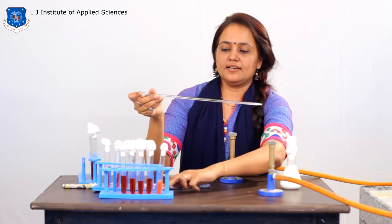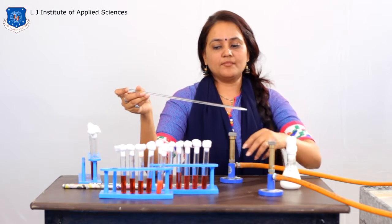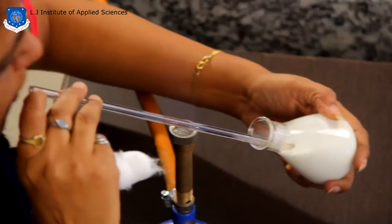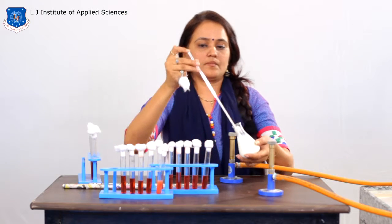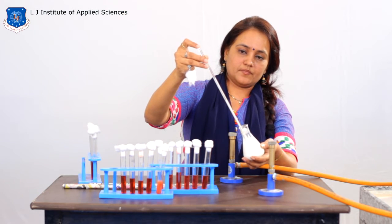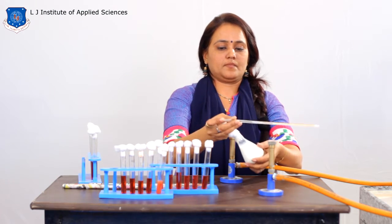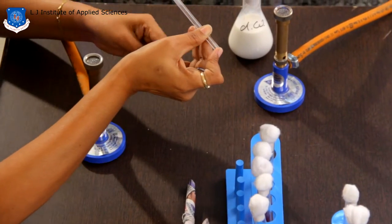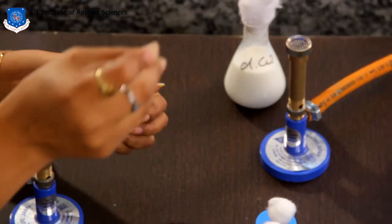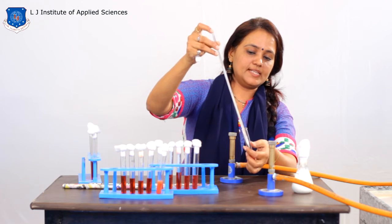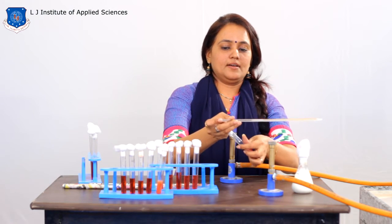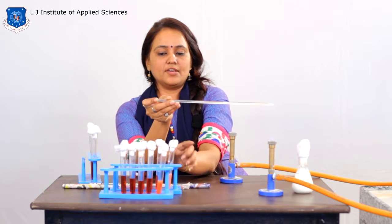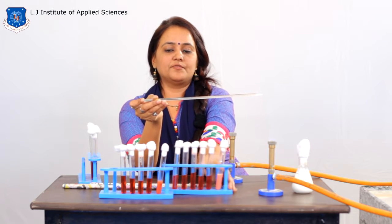In the second portion — these 5 test tubes — I am going to inoculate 1 ml sample. This is 1x 5 ml MLBB, inoculated with 1 ml sample. Mix it properly and go for incubation. Same way, you have to inoculate 1 ml in all 5 test tubes.